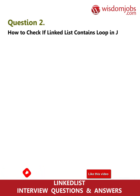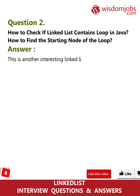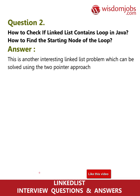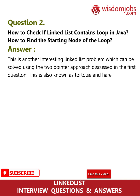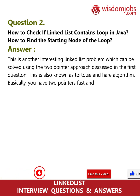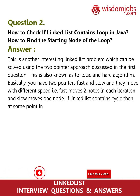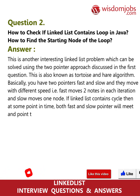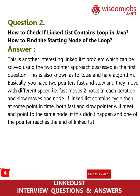Question 2: How to check if a linked list contains a loop in Java, and how to find the starting node of the loop? This can also be solved using the two-pointer approach, also known as the tortoise and hare algorithm. Fast moves two nodes per iteration and slow moves one node. If the linked list contains a cycle, both pointers will eventually meet. If one pointer reaches the end, there is no loop.